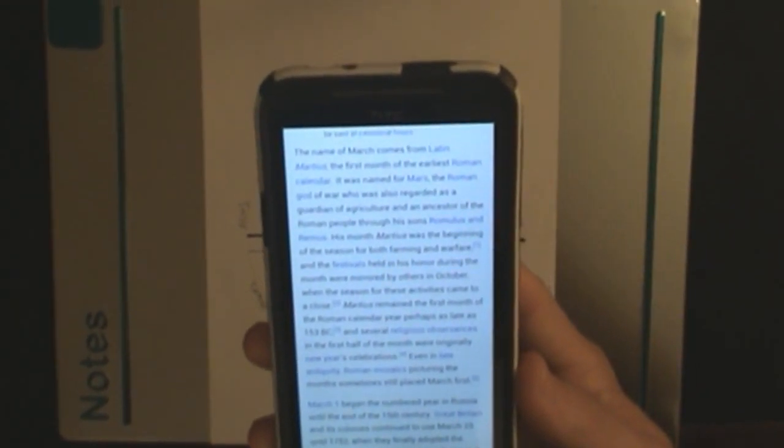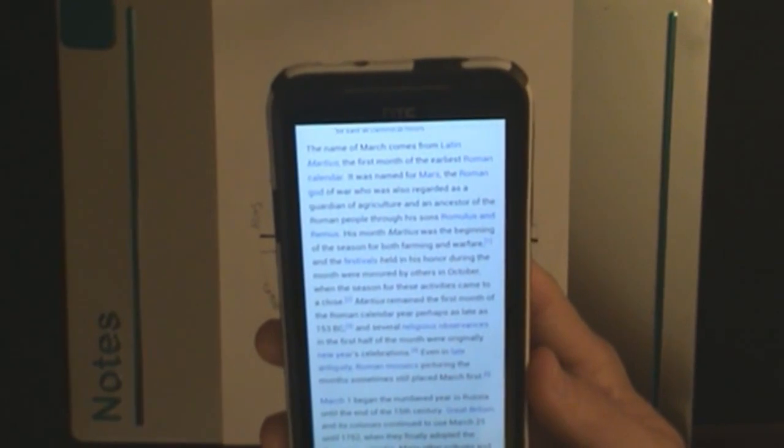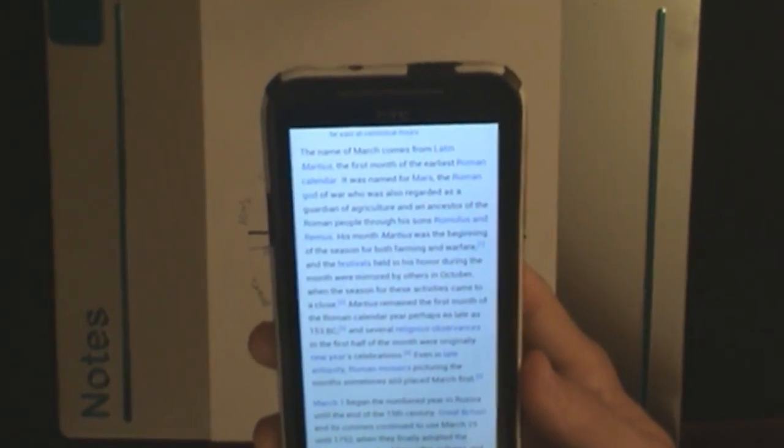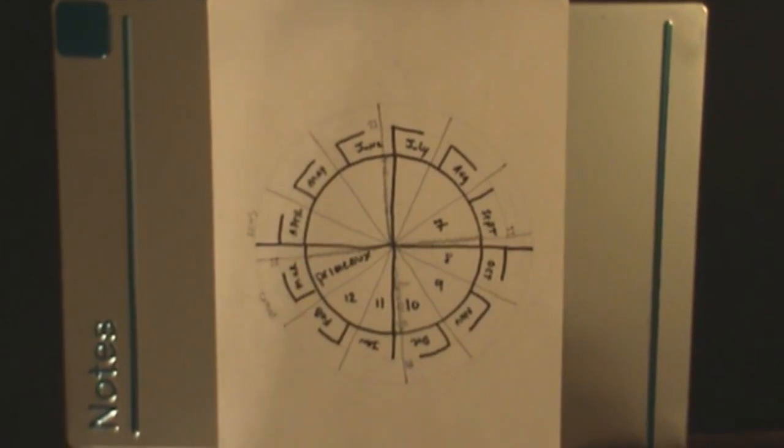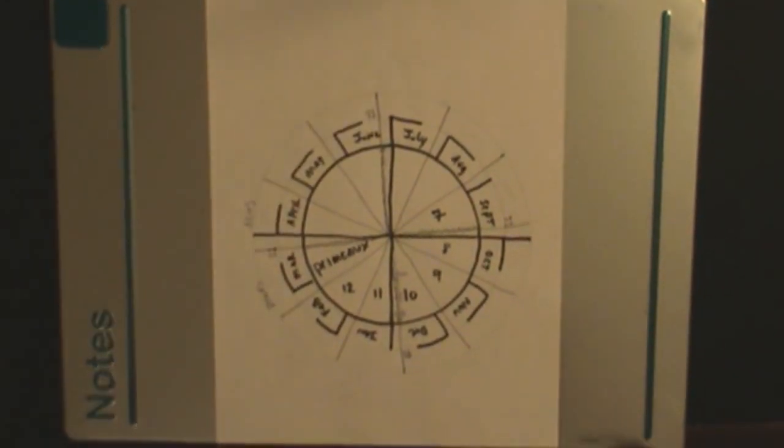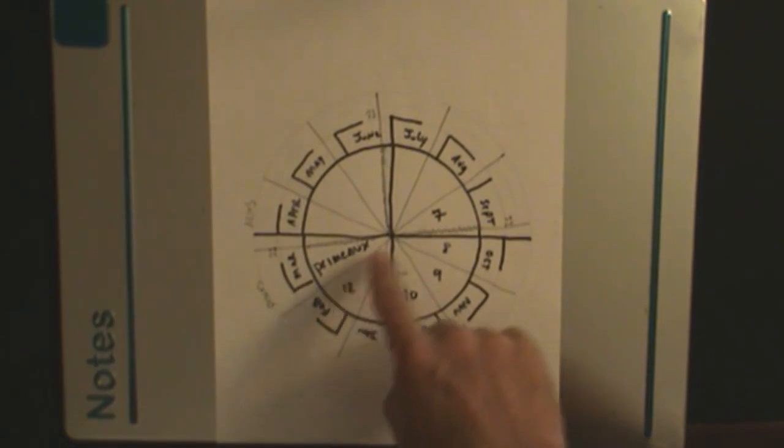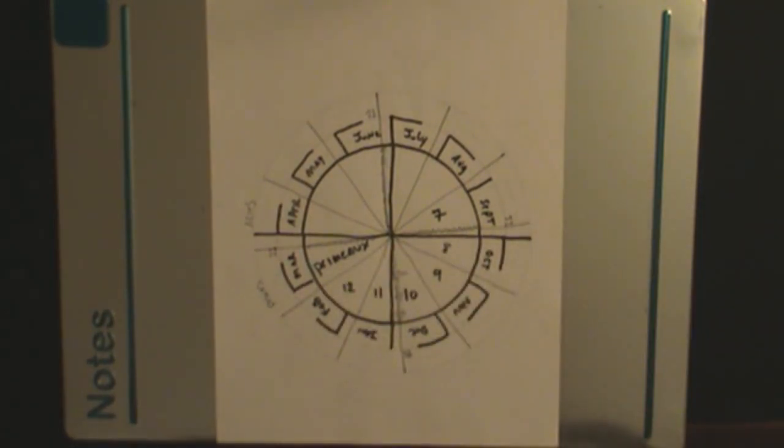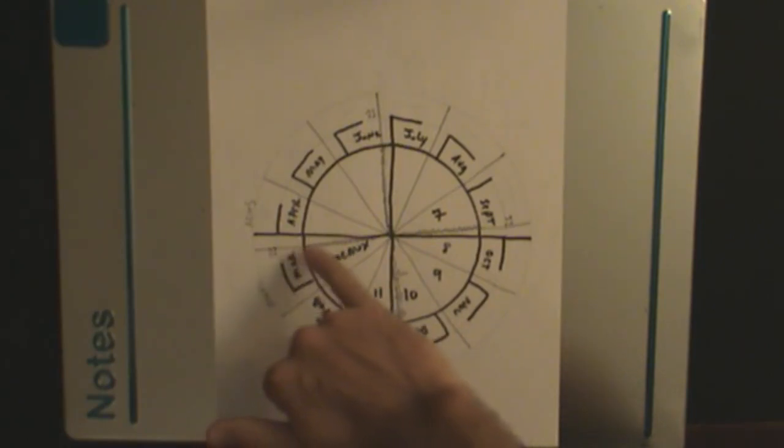Martius remained the first month of the Roman calendar year, perhaps as late as 153 BC. So there you have it. It was called Martius after the planet Mars, but it was also called primo in Latin, and primo means first, primo, number one. This is where we get the word for in Italian or Latin for primavera, which is the first blossom, the first fruits, which always occurred just after March 21st.